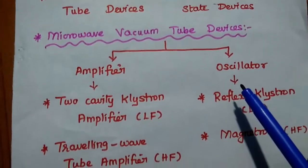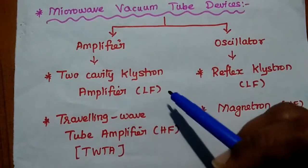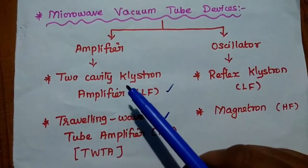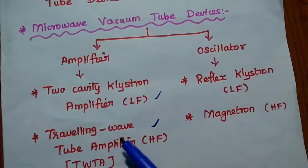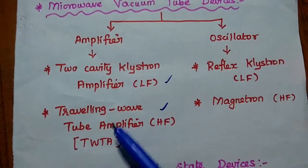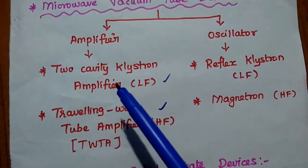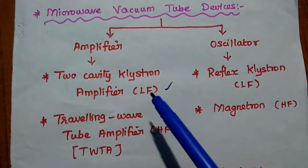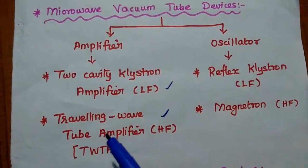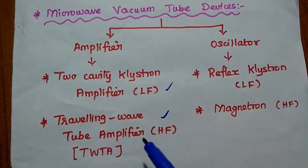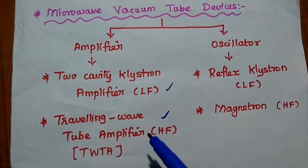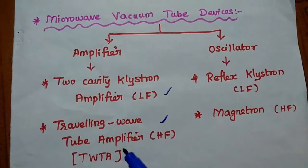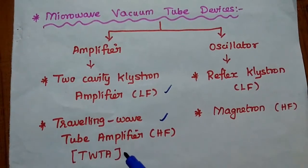Microwave amplifiers have two major examples: the two-cavity klystron amplifier and the traveling wave tube (TWT) amplifier. The two-cavity klystron amplifier is mainly used to amplify signals in the low frequency range, especially for laboratory purposes. The TWT amplifier is used for high frequency range applications.